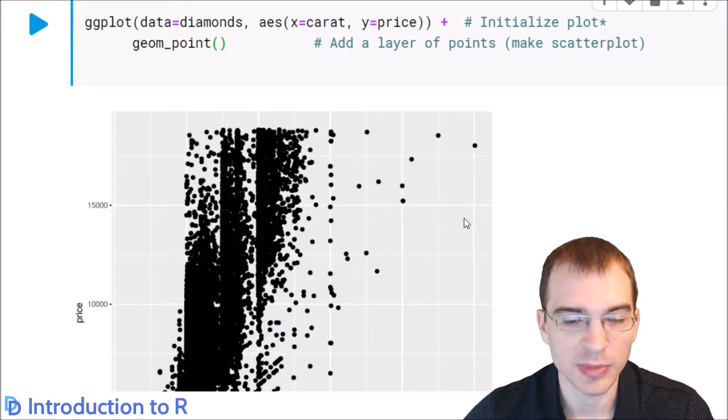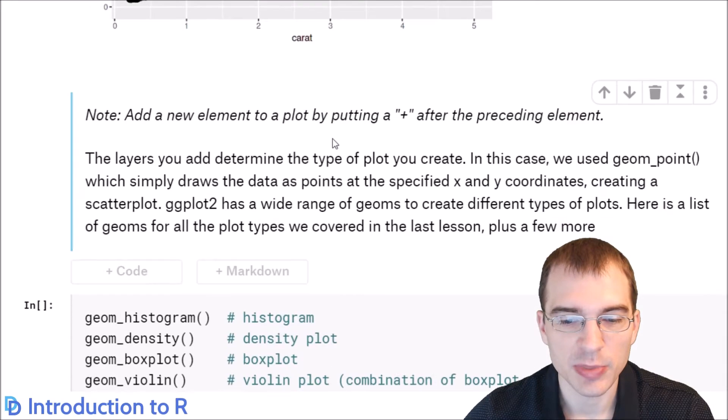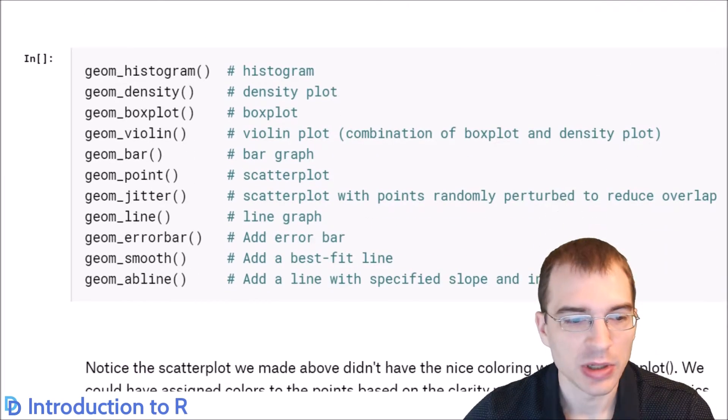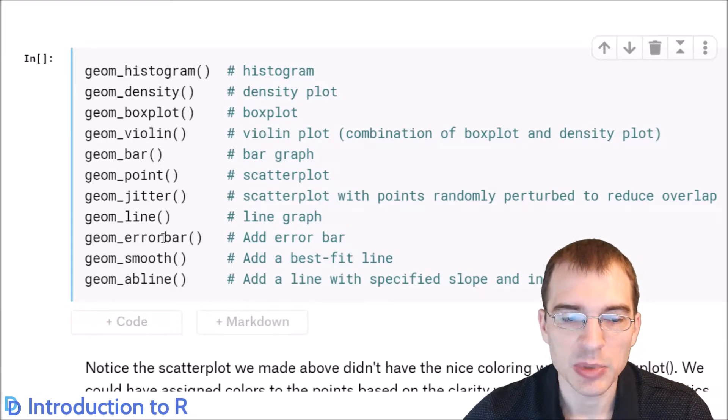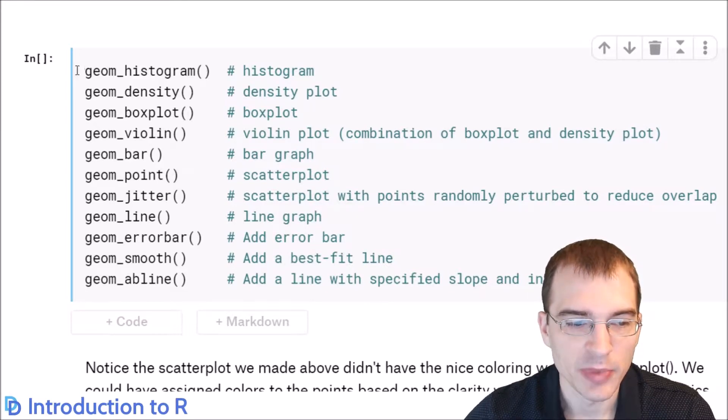Takes a little while because there's 50-some thousand points. We can add more to this function call to make this look better. Before we do that, I'm going to show you the different types of plots and geometries you can make in ggplot2. This isn't going to be an exhaustive list, but includes all of the plots we learned about last time in the base R plotting lesson. You can make histograms, density plots, box plots, violin plots, bar plots, scatter plots, etc., with just adding these different geoms.